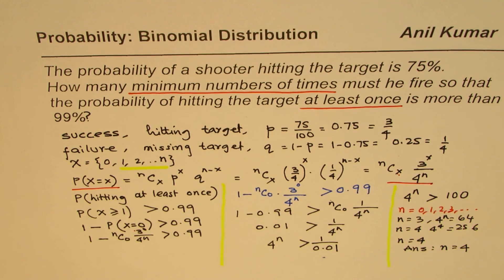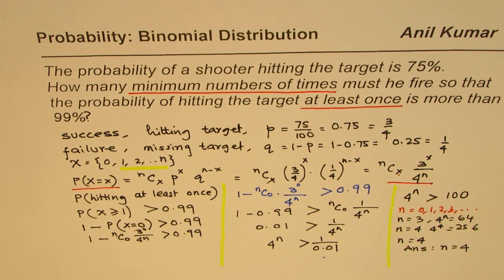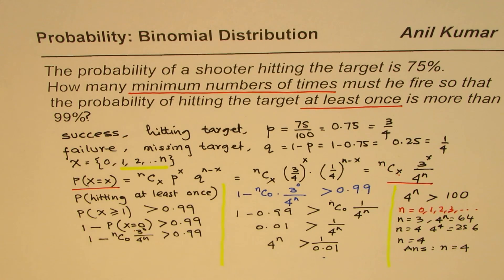This is a different type of question — instead of finding probability, we're finding the number of trials. Most questions give you the number of trials, so this is a nice variation. Let me thank my student Melissa once again for sharing such a beautiful question. Thank you, and all the best!